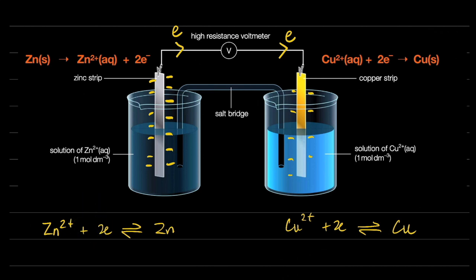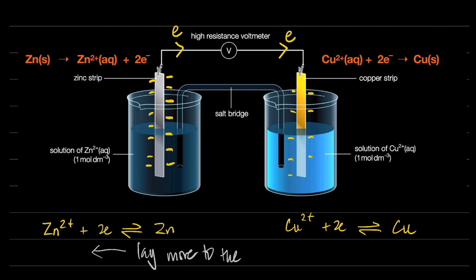So electrons moving from zinc to copper proved that zinc's equilibrium lay more to the left-hand side than copper's equilibrium.